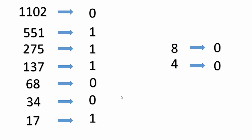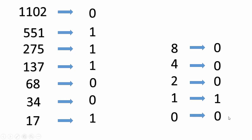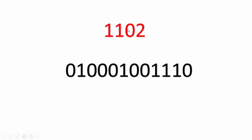We continue: dividing 4 by 2 yields 2, which is even. Dividing 2 by 2 yields 1. 1 being odd, we write down 1, subtract 1 to get 0 and the process ends. Our binary representation of 1102 is 0 1 0 0 0 1 0 0 1 1 1 0. The number coming last is our MSB while the first is our LSB — and there we have the binary representation of 1102.